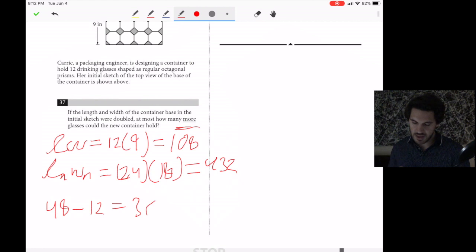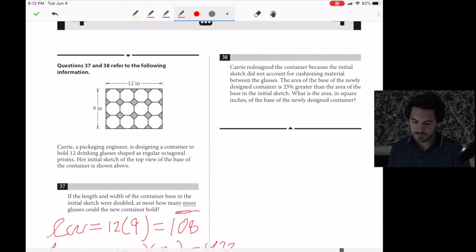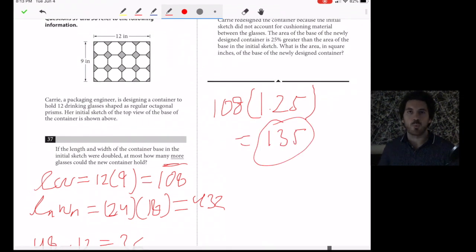And finally, the last question. Carrie redesigned the container because the initial sketch did not account for cushioning material. The area of the base of the newly designed container is 25% greater than the initial sketch. What is the area in square inches of the base of the newly designed container? Take the original area, multiply by 1.25, and we get 135. That's it. That was the calculator section.